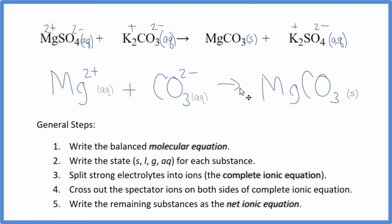So this is the balanced net ionic equation for magnesium sulfate plus potassium carbonate. You'll note that charge is conserved. We have 2 plus, 2 minus. That gives us a net charge of 0 here. This is a neutral compound, so net charge of 0 as well.